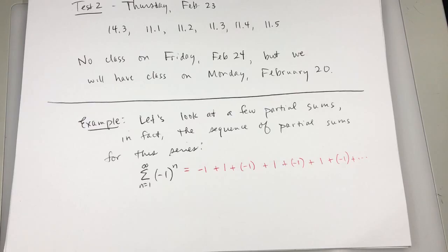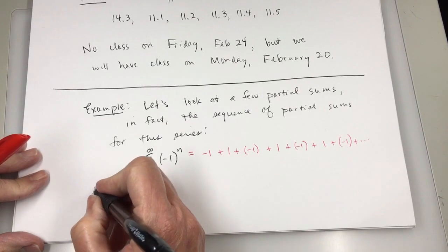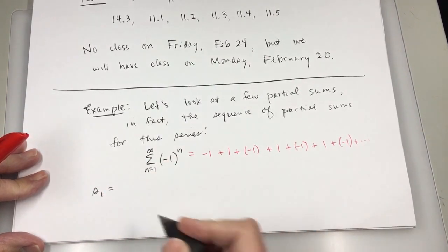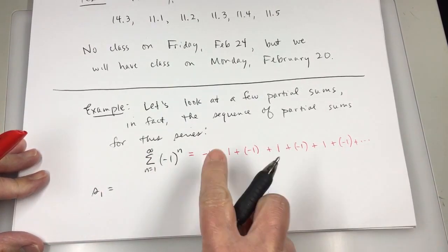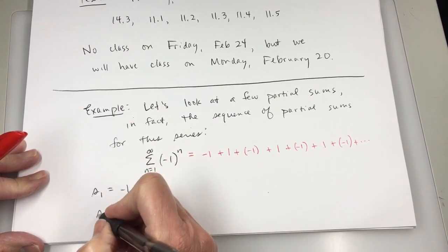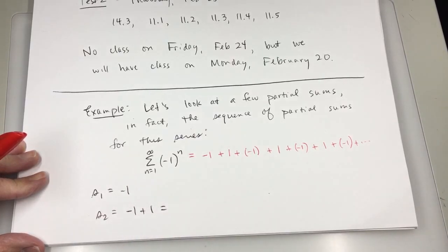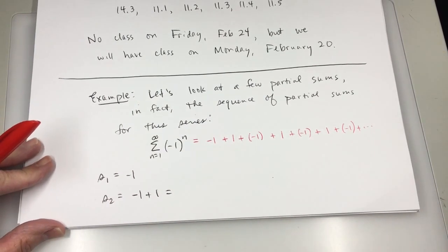If you look at the sequence of partial sums, so S sub 1 is just negative 1. S sub 2 is negative 1 plus 1, which is 0.